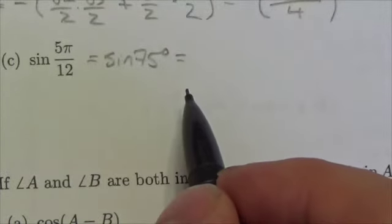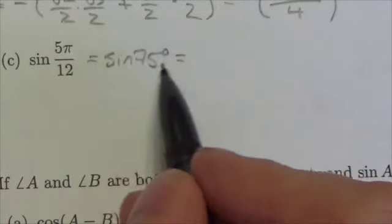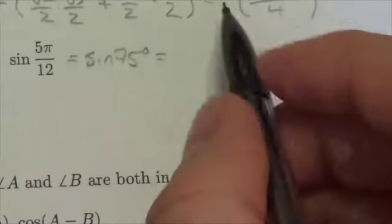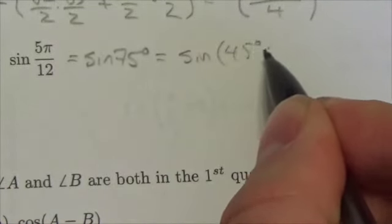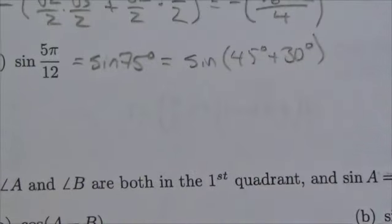Now, I've just got to think, what angles do I know? What special angles do I know that will help me get to 75? And the answer is this will end up being the sum of 45 degrees plus 30 degrees. Okay.